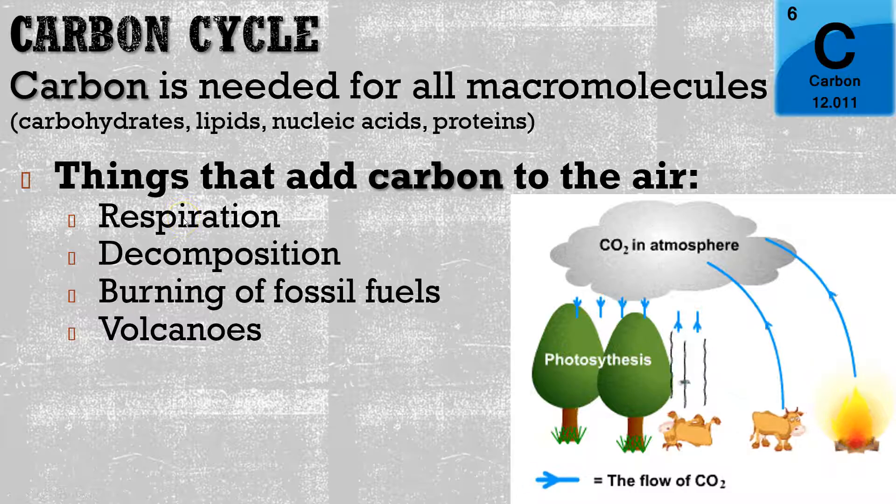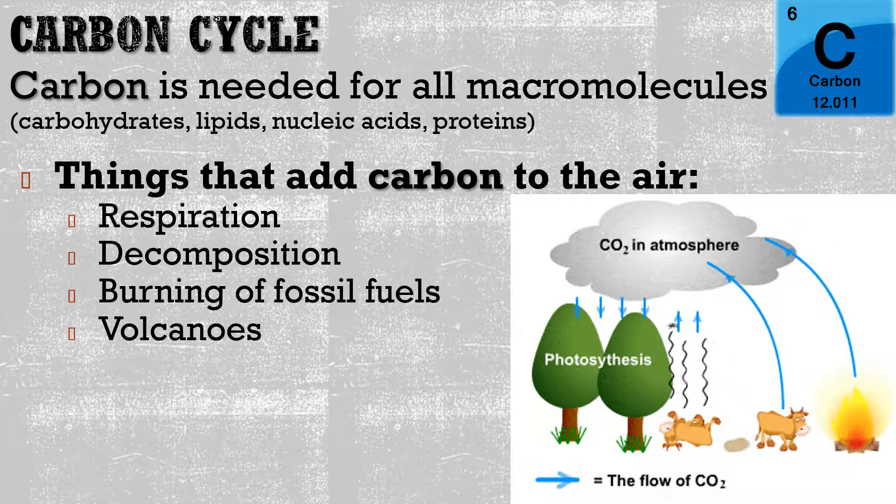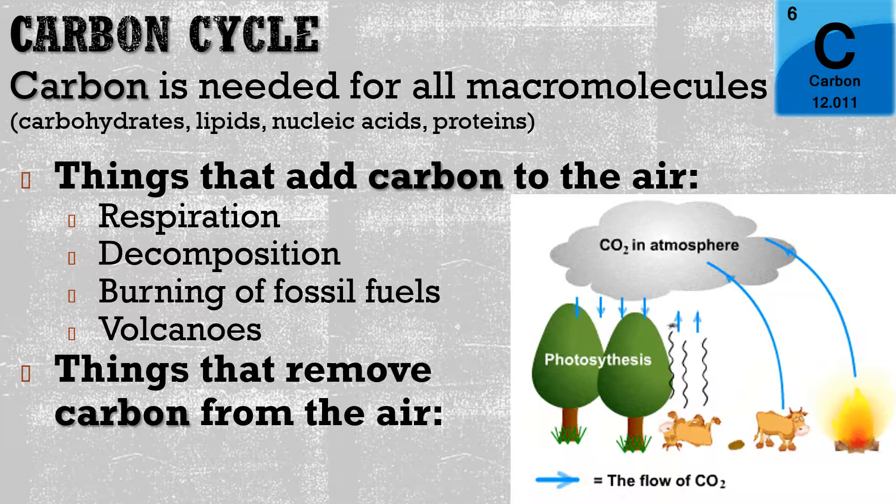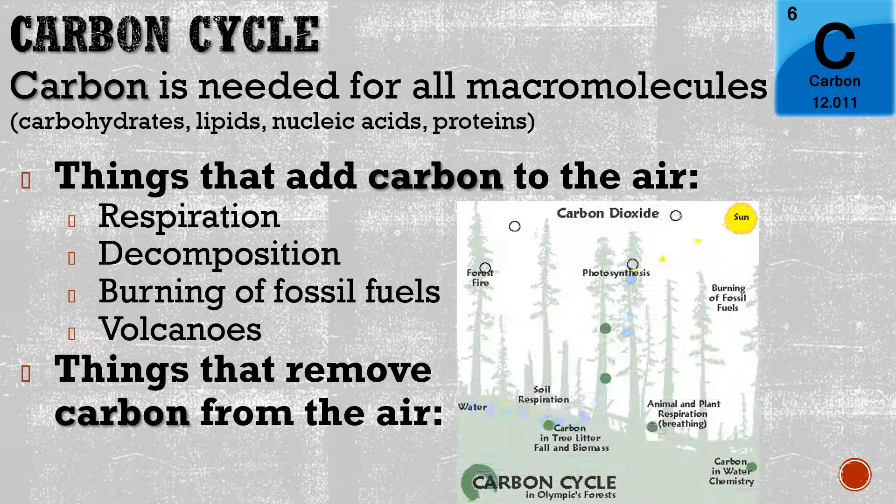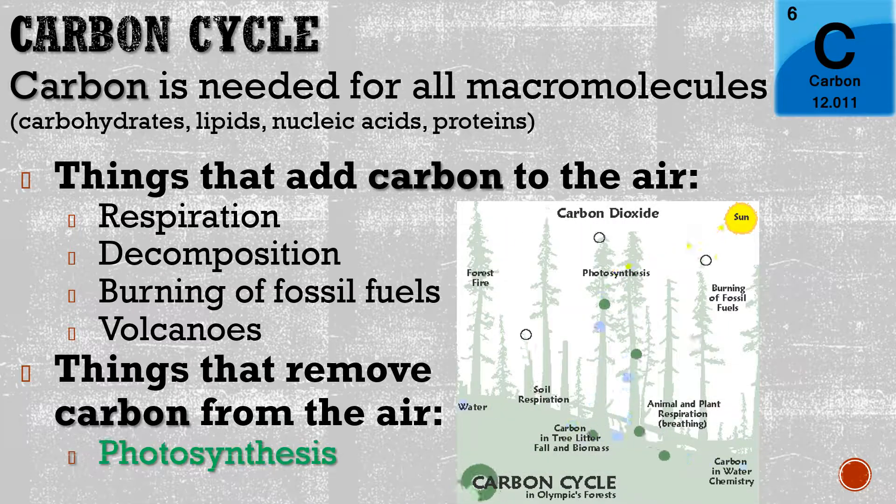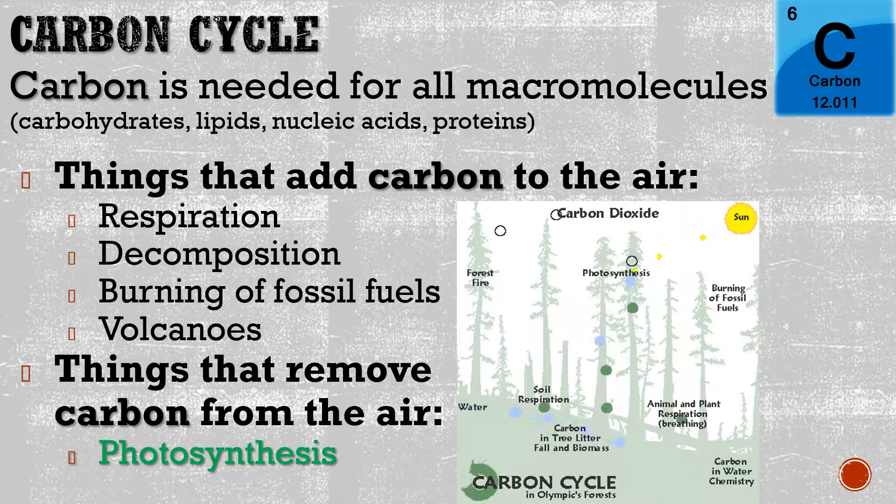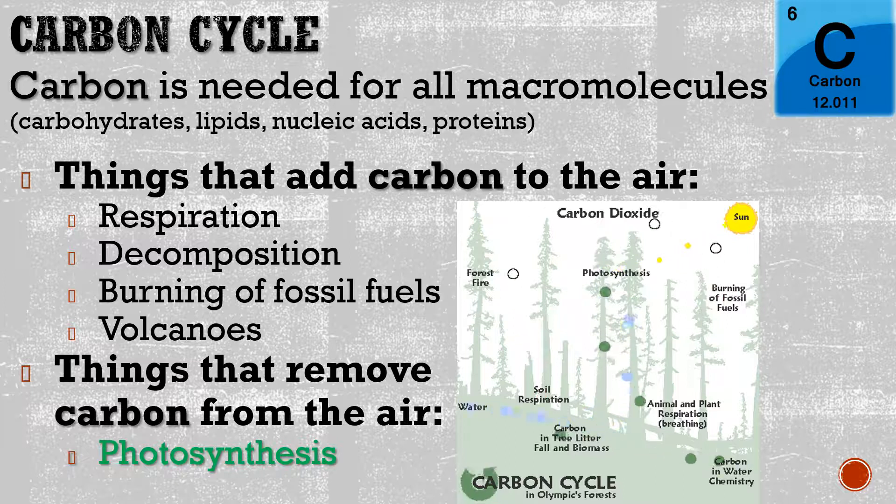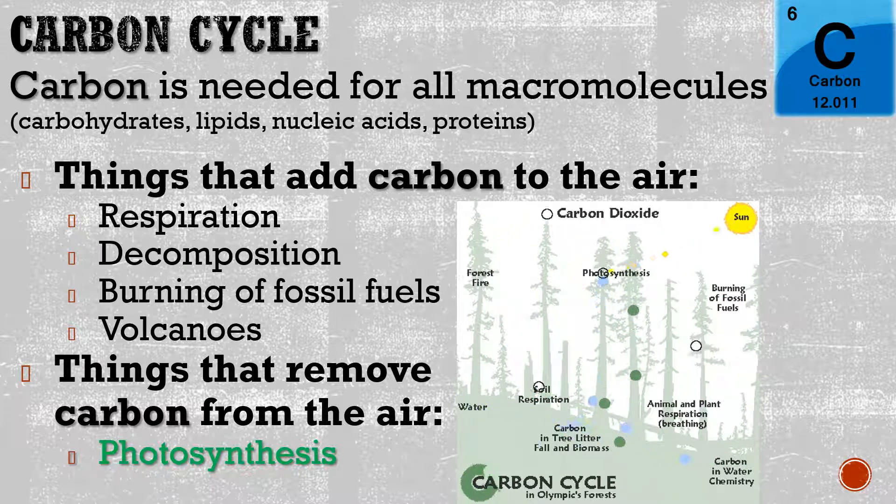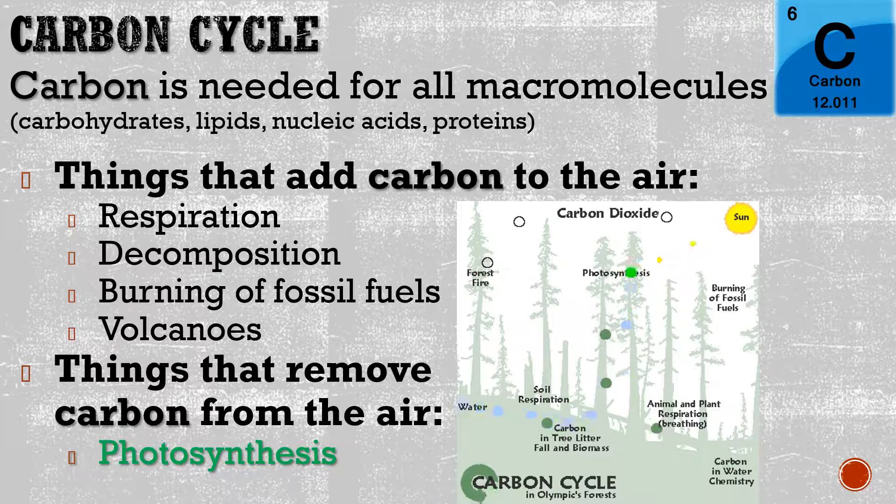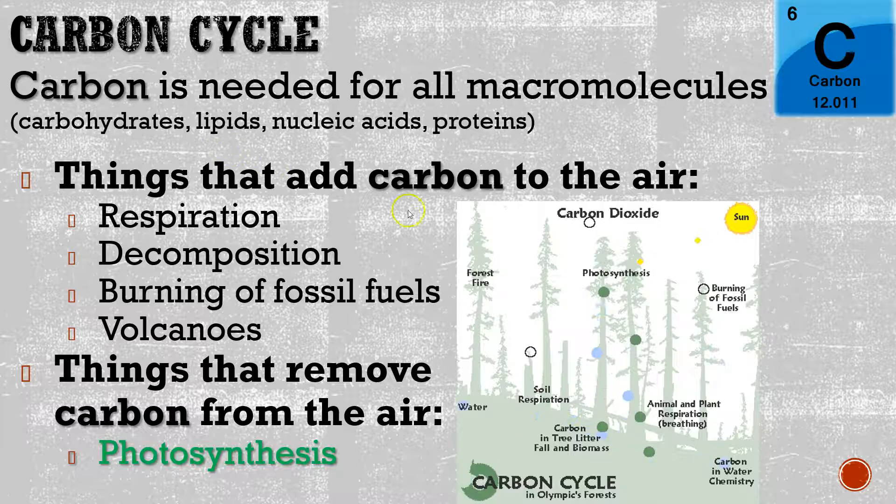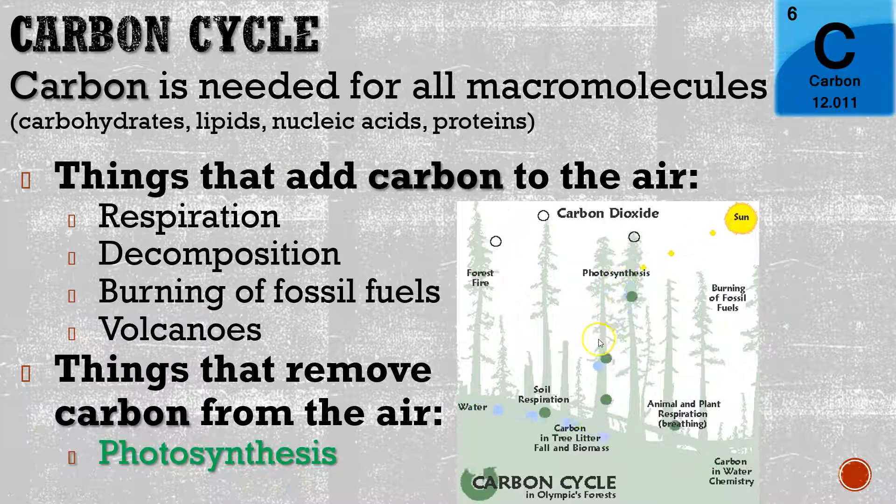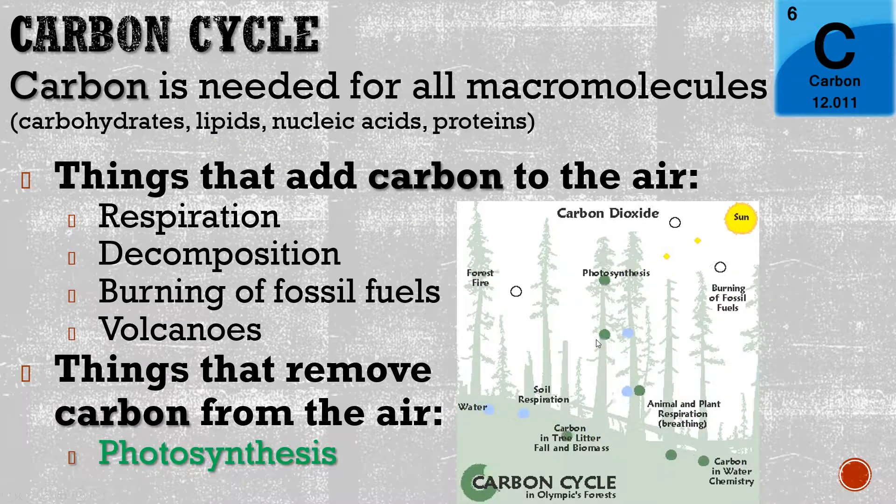So respiration, decomposition, burning of fossil fuels, and even volcanoes are all going to be adding carbon into the air. And the only thing that removes carbon from the air is photosynthesis. That's the one thing. So when you're cutting down a tree and burning it, that's sort of like a double damage to the atmosphere. You're taking out the one thing that was pulling carbon, and you're burning it, so you're releasing that carbon into the air. We've got a whole bunch of different things that are releasing it, and only one process is pulling it back down and storing it.